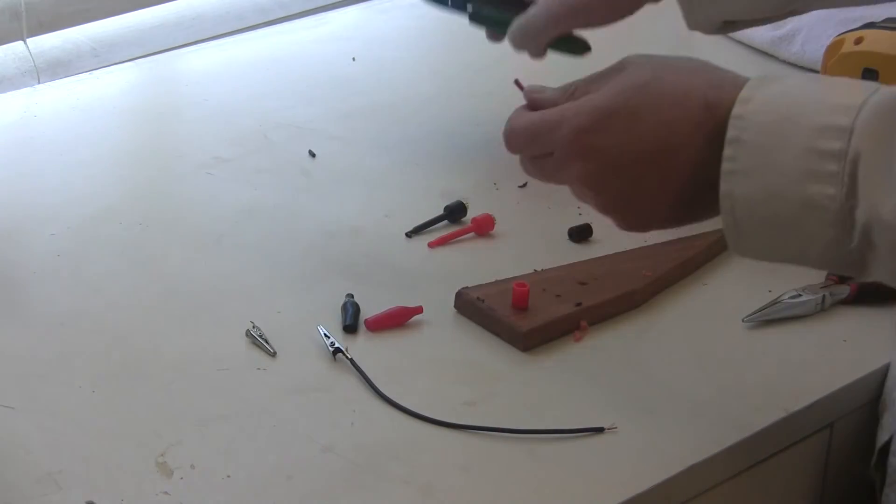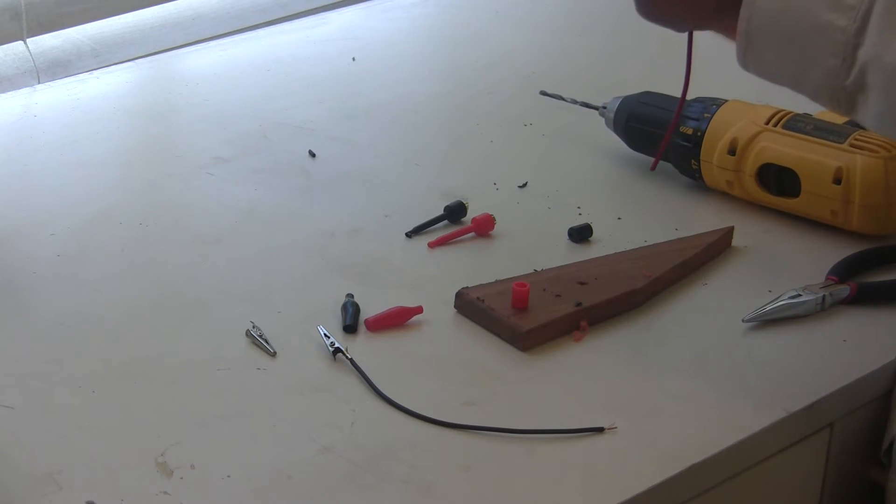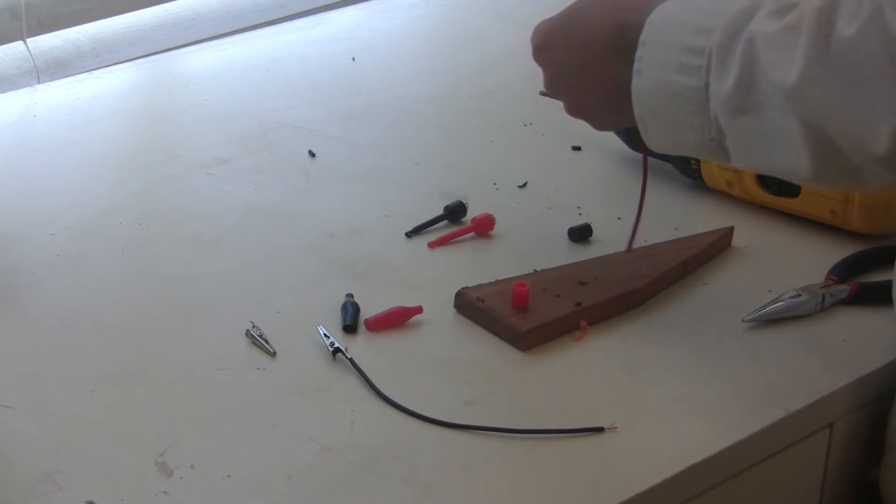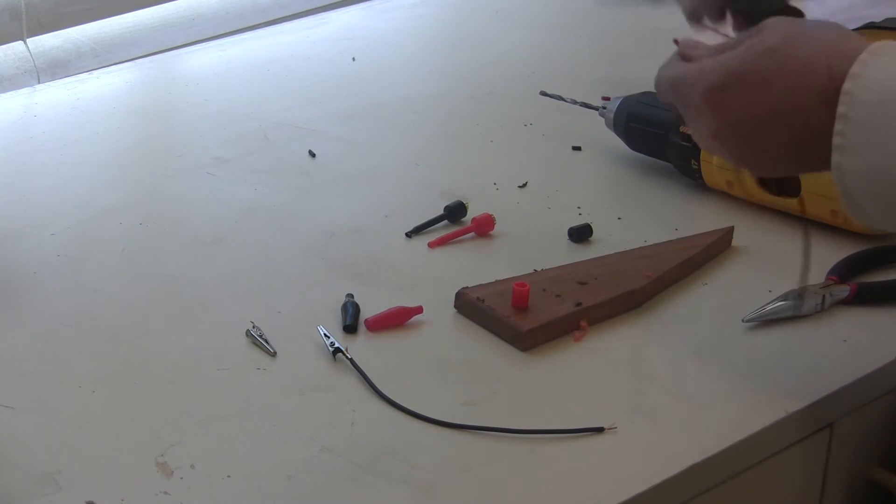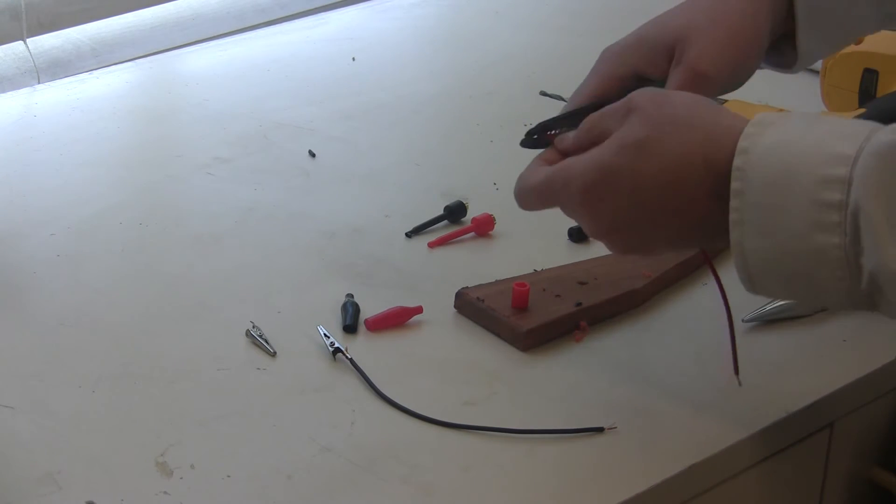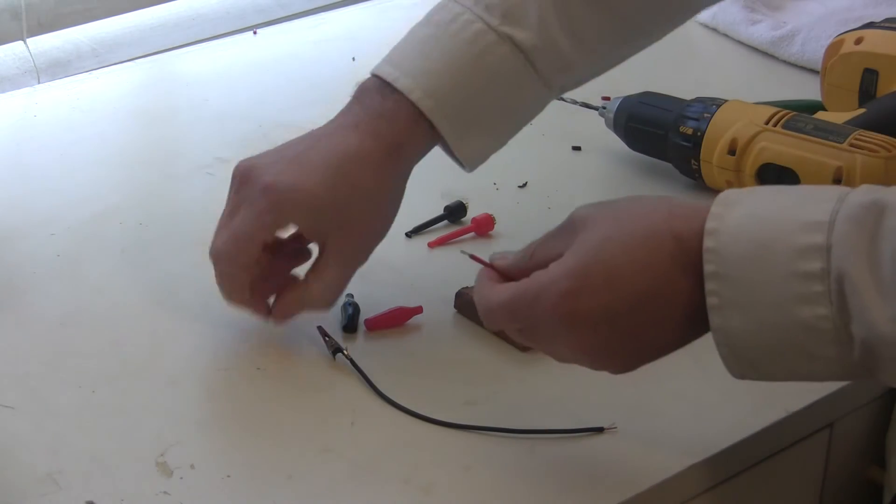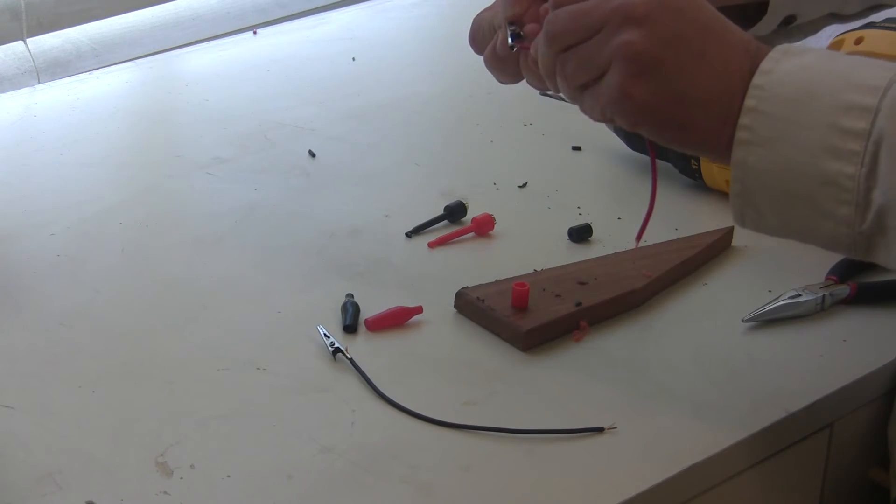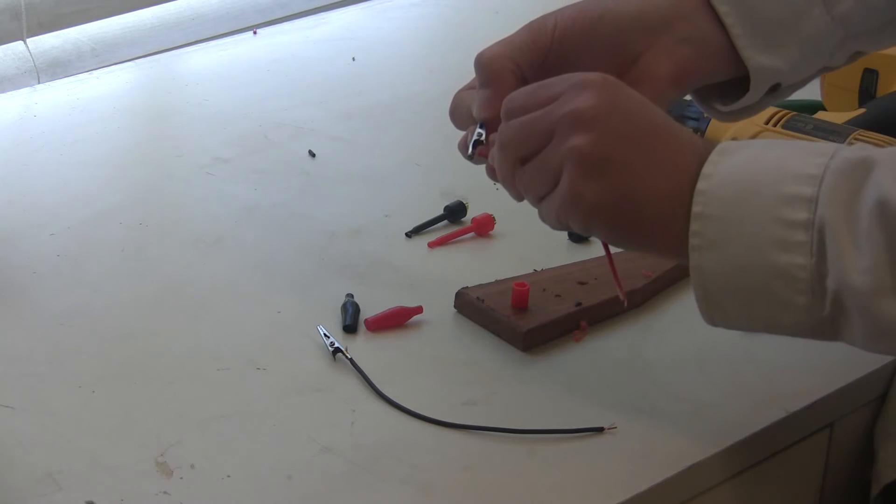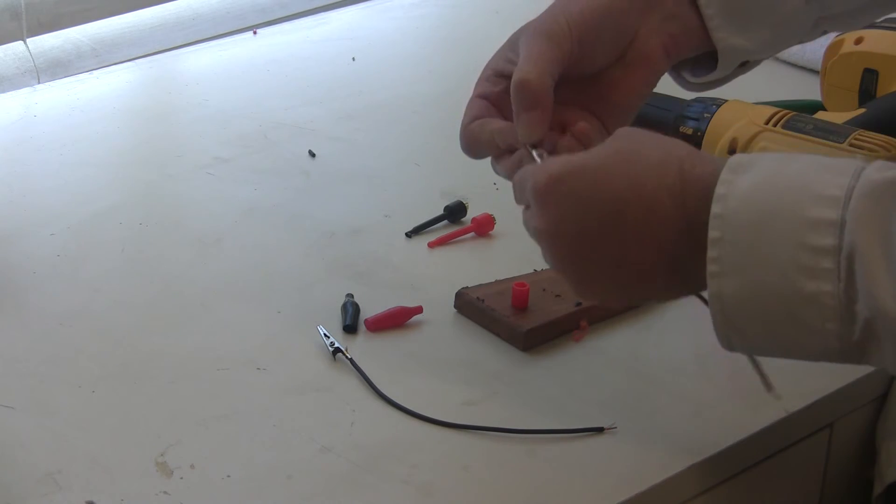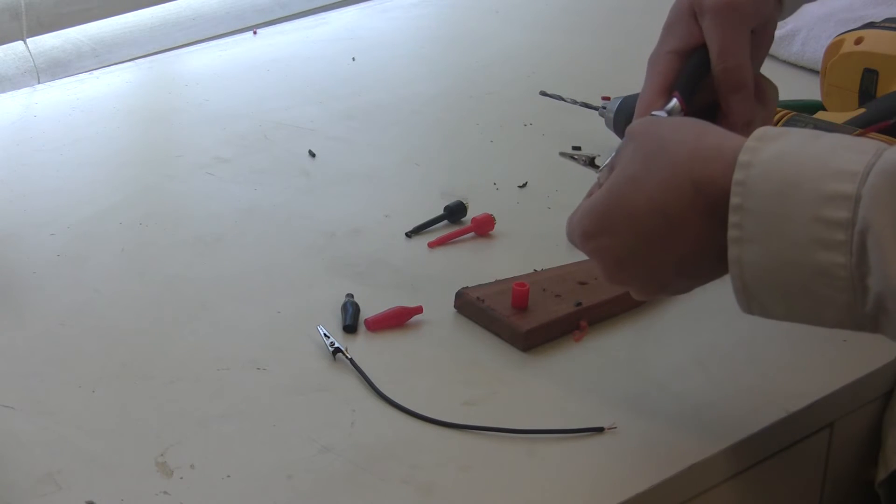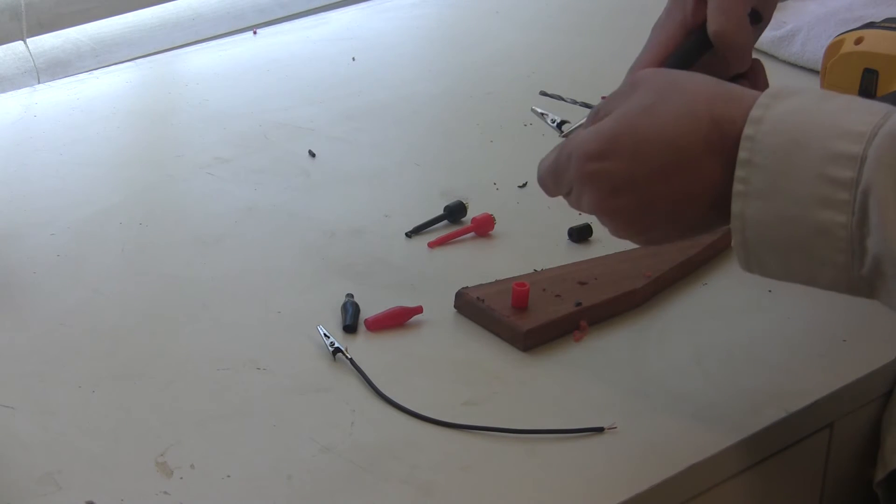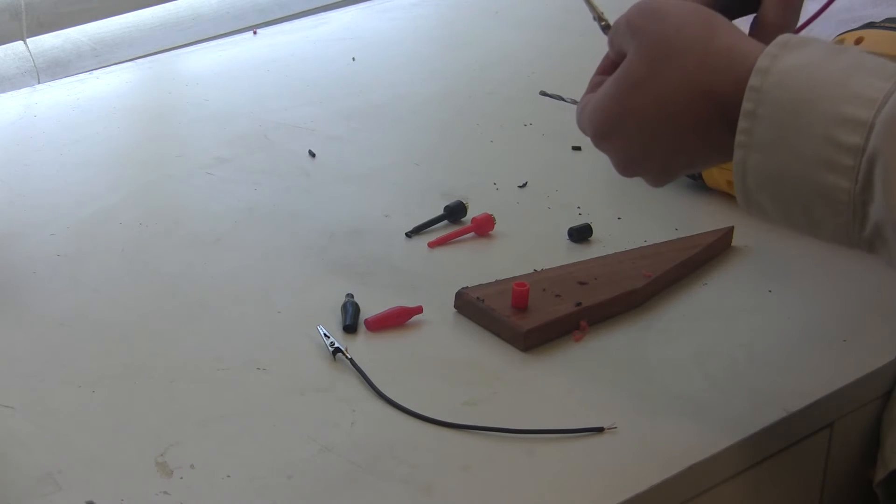I'll do the other one and then I'll heat up my soldering iron and solder here and on the mini grabber. So I'm going to just strip this one a little bit and poke that in here and crimp this down on the insulation of the wire. Nothing to it.